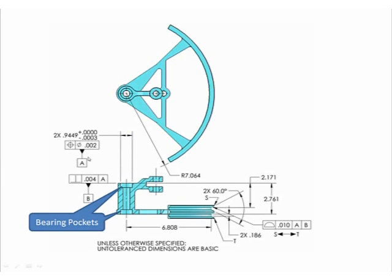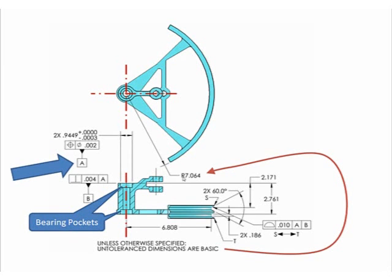As you can see here, I'm calling it datum feature A, 2X, so the two pockets establish a common axis that the pulley can then pivot around. On that critical radius and on these V-grooves, we have a profile tolerance of 0.010. Now the 7.064 isn't directly toleranced. It's a basic dimension, which means that's the goal, and the tolerance of 0.010 is on the surface with respect to the axis established by A.